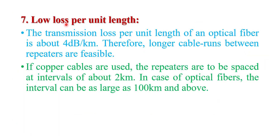The next advantage is low loss per unit length. In optical fiber, there is low loss per unit length. The transmission loss per unit length of optical fiber is about 4 dB per kilometer. Therefore, longer cable runs between repeaters are feasible. If copper wire cables are used, repeaters need to be spaced at intervals of about 2 kilometers. In the case of optical fiber, the interval can be as large as 100 kilometers or even more.